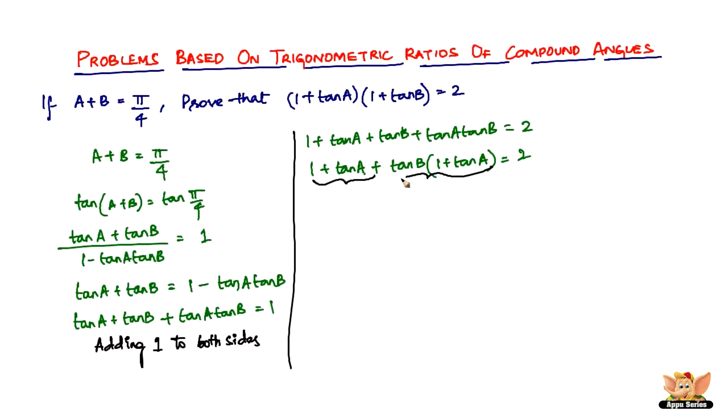Take out 1 plus tan A, this is one term. If you see carefully, both these terms have 1 plus tan A. So take out 1 plus tan A and you get 1 plus tan A, and in the place of 1 plus tan A write 1, so it becomes 1 plus tan B.